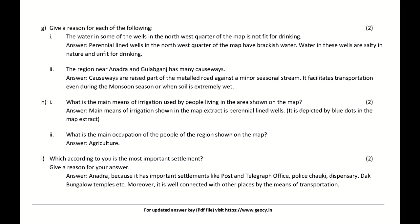What is the main means of irrigation used by people living in the area shown on the map? Answer: The main means of irrigation shown in the map extract is perennial lined wells, depicted by blue dots in the map extract. What is the main occupation of the people of the region? Answer: Agriculture.